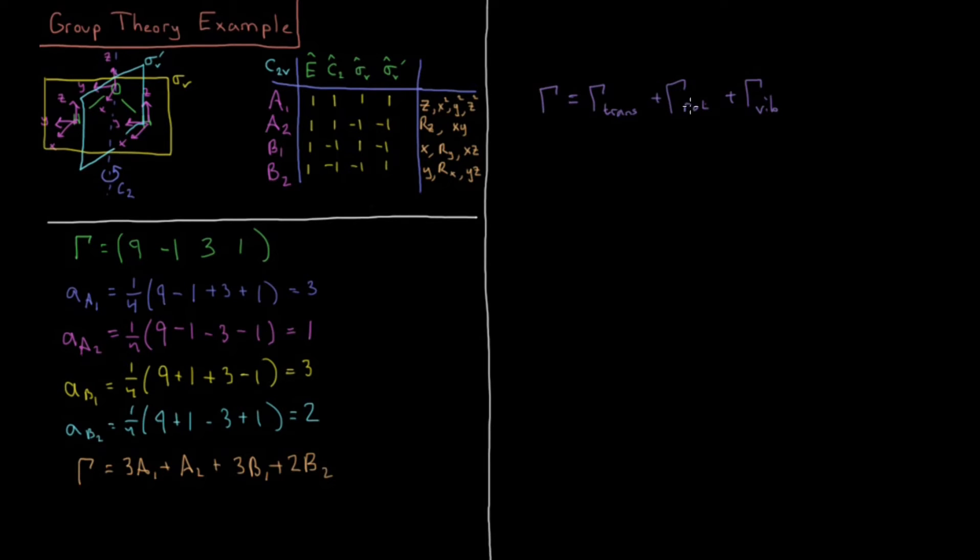Okay, so our irreducible representation is a sum of three different things. Our irreducible representation for all of our displacements is a sum of translations plus rotations plus vibrations. Okay, so what do we know about translations and rotations? Well, that's what this part of the character table comes in very handy. We can use these to determine what the reducible and irreducible representations of each of those are. So what we know is that the reducible representation of the translations is equal to wherever they have this X, Y, and Z located inside the character table. That's where the translations are. So the translation is Z is A1, so if we just displace in the Z direction, that's A1, plus displacing in the X direction, the whole molecule, is B1, plus B2 is the Y direction.